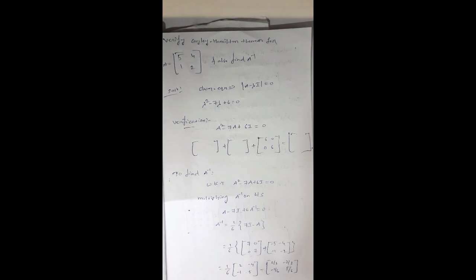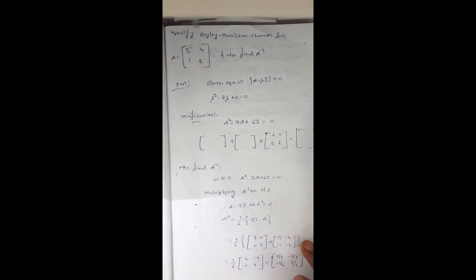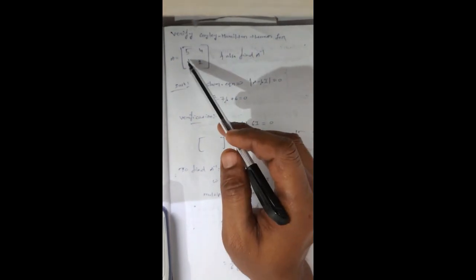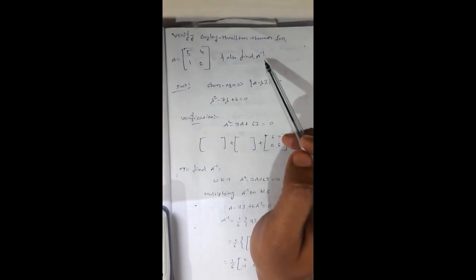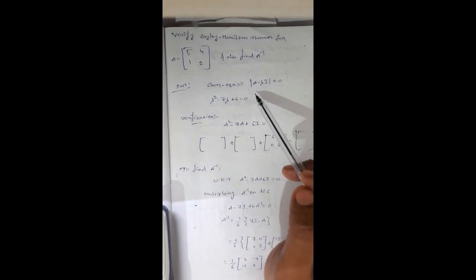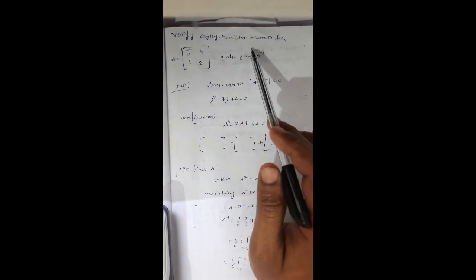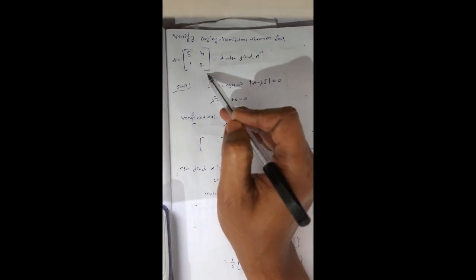Hello friends, this is Venkat. I am going to explain about verification of the Cayley-Hamilton theorem using a calculator. The first example: verify the Cayley-Hamilton theorem for the matrix [5, 4; 1, 2] and also find A inverse. The Cayley-Hamilton theorem states that every square matrix satisfies its own characteristic equation.